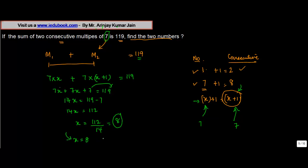So we get the value of x equals 8, but x was one of the numbers. The other one was x plus one, which is 9.